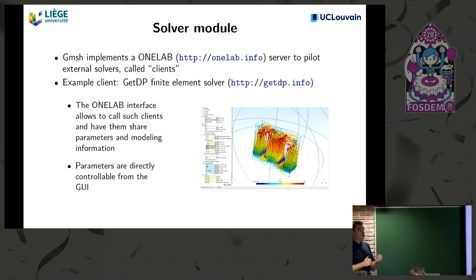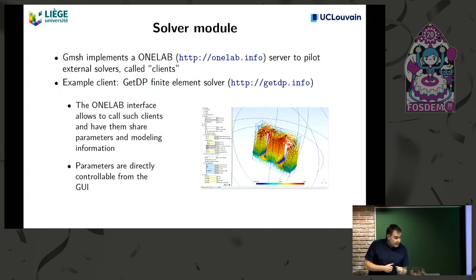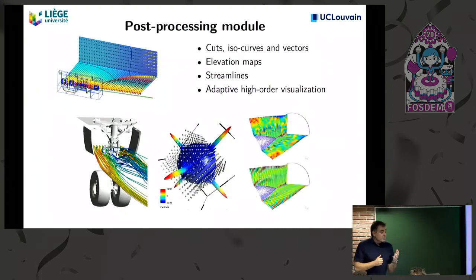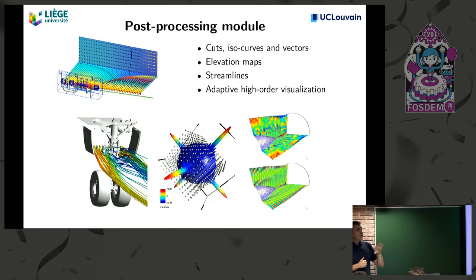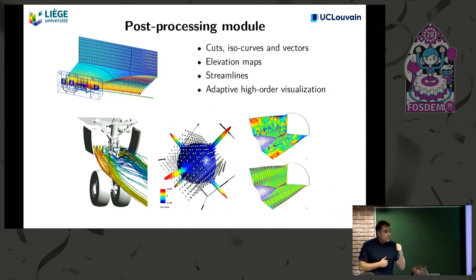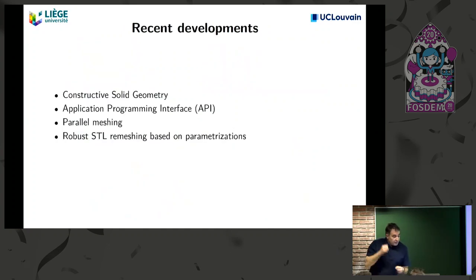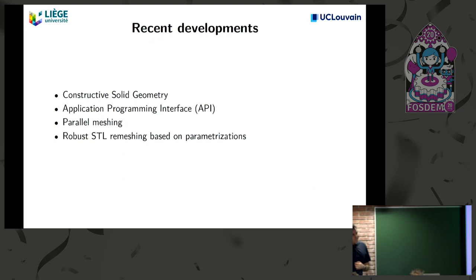There is a solver module that contains no actual solver — it's just an interface to solvers. The post-processing module is still useful compared to ParaView because we support high-order visualization, which ParaView is working on but hasn't fully achieved yet.